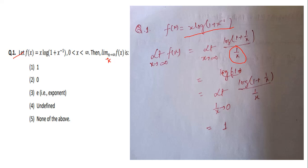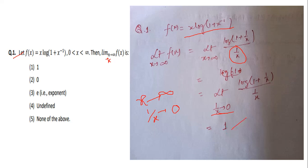As x tends to infinity, 1/x tends to 0. From the standard limit formula, limit as y tends to 0 of log(1 + y) / y equals 1. Here y means 1/x, so the answer is 1. Option number 1 is the correct answer.